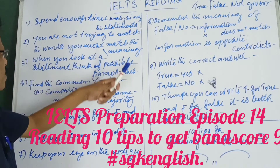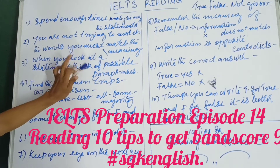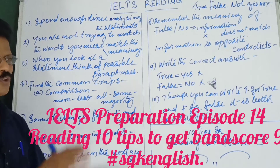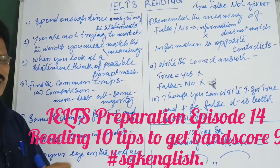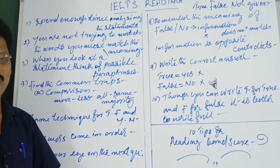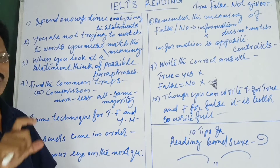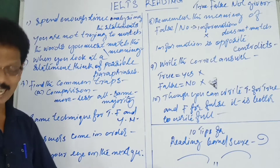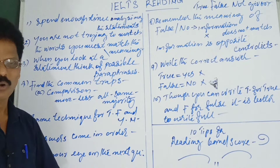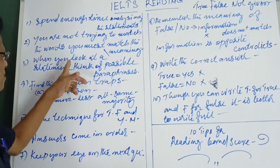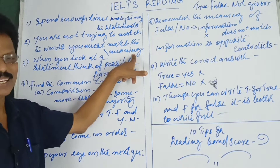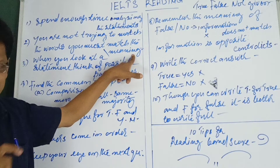Point number two: you are not trying to match words — you must match the meaning. Don't compare individual words between the statement and the passage. Whether the answer is True, False, or Not Given, what matters is whether the entire sentence's meaning matches. The whole sentence conveys one idea, and that idea should match the other one before you can say it is True or False.